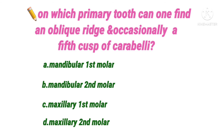Next question: on which primary tooth can one find an oblique ridge and occasionally a fifth cusp of Carabelli? Option A mandibular first molar, B mandibular second molar, C maxillary first molar, D maxillary second molar. The primary maxillary second molar is the tooth which most closely resembles the permanent maxillary first molar. An oblique ridge and occasionally a fifth cusp of Carabelli is found on the primary maxillary second molar.